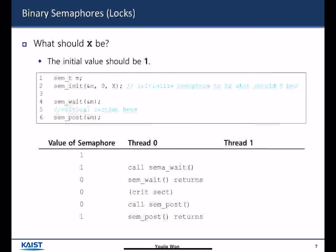A binary semaphore is a semaphore where the value can be either zero or one. It is very important to initialize the value of the semaphore properly. If we would like to use the semaphore as a lock, looking at the sample code with sem_wait and sem_post, the semaphore value has to be initialized to one in order to be used as a lock.